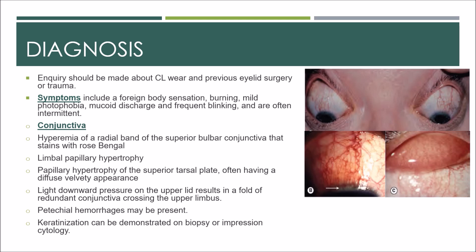On examination, the conjunctiva shows hyperemia of a radial band of the superior bulbar conjunctiva, as shown in the first figure. This radial band pattern is very specific and can be seen macroscopically. It stains with rose bengal and may be best seen macroscopically, as shown in the picture. This finding is very location specific.